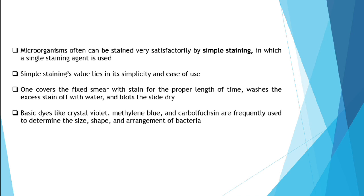Microorganisms can often be stained very satisfactorily by simple staining, in which a single staining agent is used. Simple staining is easy to use — one covers the fixed smear with the stain for the proper length of time, washes the excess stain off with water, and allows the slide to dry. Basic dyes such as crystal violet, methylene blue, and carbolfuchsin are frequently used to determine the size, shape, and arrangement of bacteria.